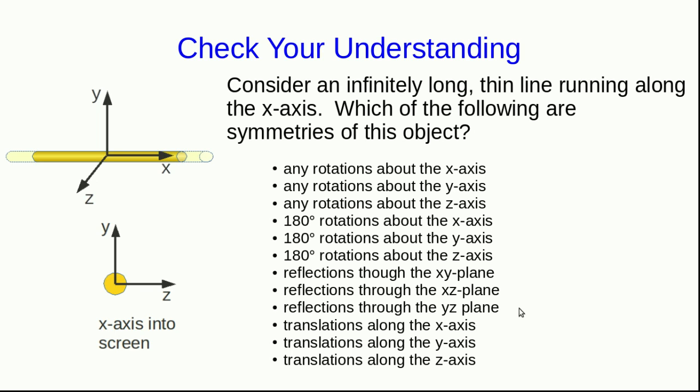We've already discussed in the electric fields unit that, of course, no real object is infinite. Things like infinitely long thin lines are often reasonable approximations for real objects when we're finding the electric fields due to them. So we're very interested in symmetries of objects like this. So let's think about an infinitely long thin wire that runs along the x-axis. This is a very highly symmetric object. So you, before you go on to the next lecture, should think about which of these are symmetries of this object. And I will say not all of them are, but many of them are.